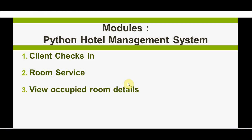The third module is that the hotel admin can view occupied room details. Finally, the checkout module: whenever a client checks out, get the room number and calculate the room bill based on the duration of the stay and price of the room type. We sum up the room bill and the room service bill. These are the modules we are going to implement in our project.